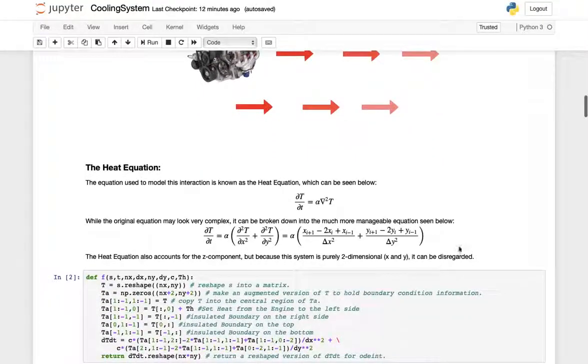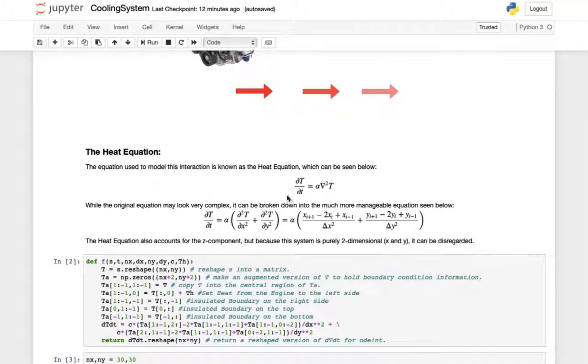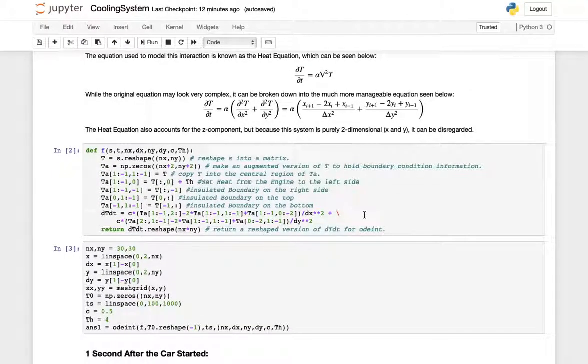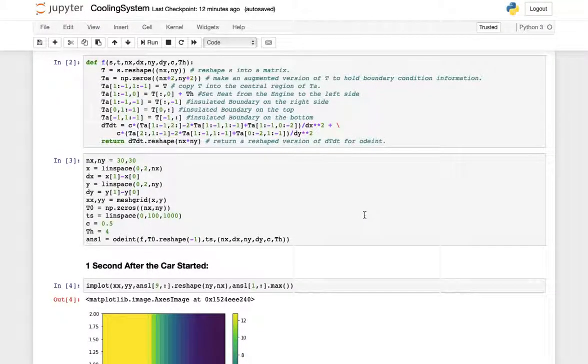We're using an equation called the heat equation to model this. It can be broken down into a simpler form which is saying that the partial derivative of temperature with respect to time is equal to a constant alpha times the second partial derivative of temperature with respect to x position plus the second partial derivative of temperature with respect to y. This code uses this heat equation and the boundaries I've set up to create a model of this.